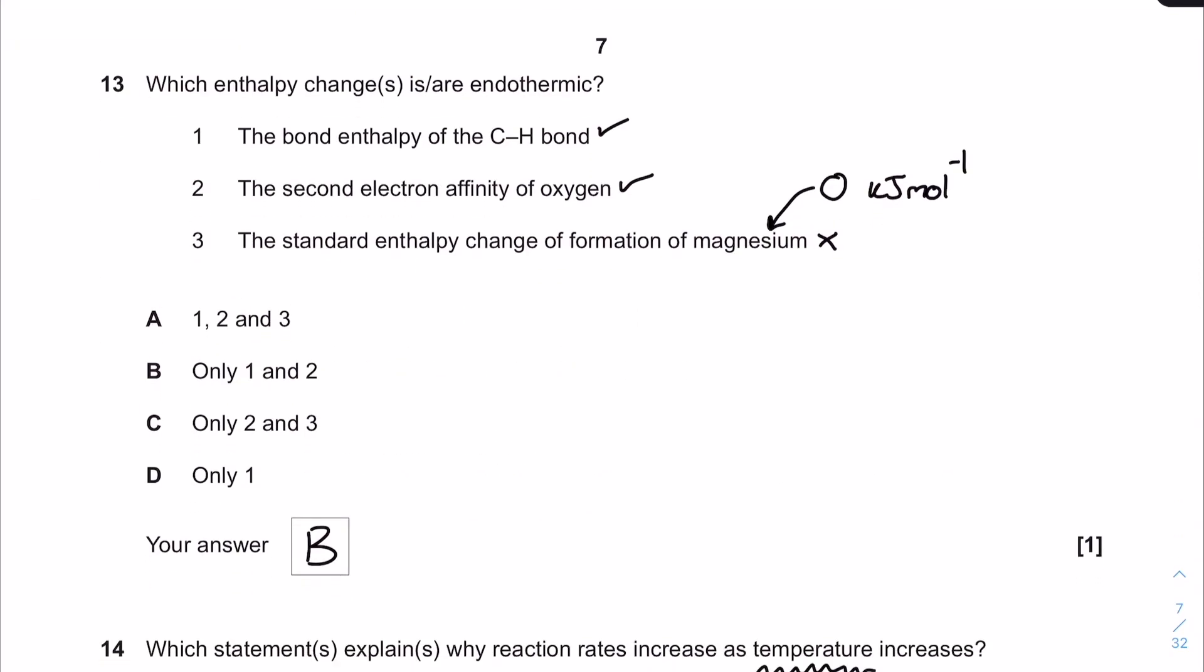Question 13. Which enthalpy change is or are endothermic? We've got the bond enthalpy of a CH bond - bond enthalpies are always endothermic so that gets a tick. Second electron affinity of oxygen - yep, second electron affinities are always endothermic. The standard enthalpy of formation of magnesium - well it doesn't have one because it's an element, so that would be zero kilojoules per mole. That means it's just one and two, so the correct answer was B.